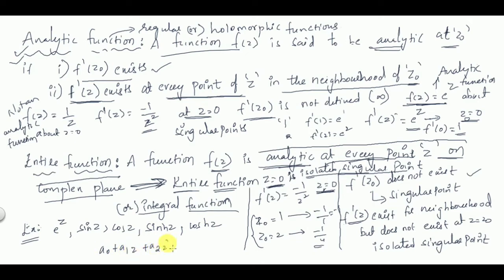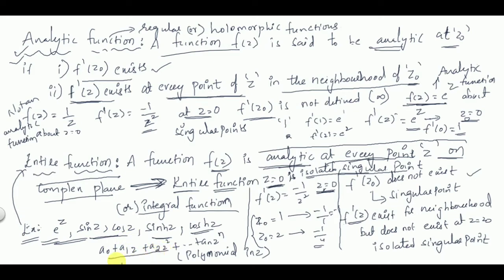Examples of entire functions — if you see these functions anywhere, you can say they are analytic: e^z, sin z, cos z, sinh z, cosh z, and polynomials in z (a₀ + a₁z + a₂z² + ... + aₙzⁿ). All these are entire functions, meaning they are analytic at every point on the complex plane.